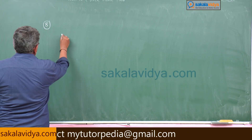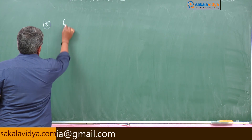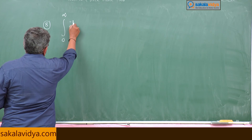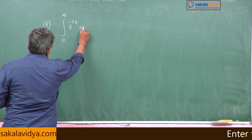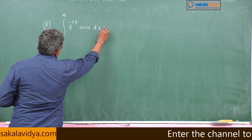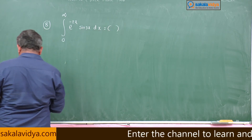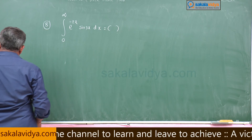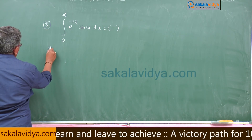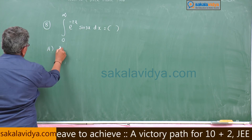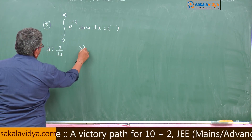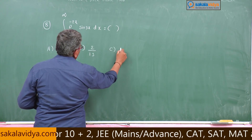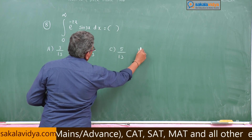Next problem: evaluate 8 × ∫₀^∞ e^(−2x) sin(3x) dx. The options are: A) 3/13, B) 2/13, C) 5/13, D) 0.